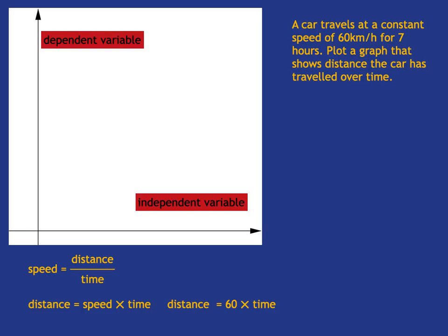And if you think about it in this case, how far the car has traveled really depends on how much time it's had to be traveling, right? So how far it travels, the distance, is dependent on the time. So our dependent variable in this case is the distance. And our independent variable is the time.